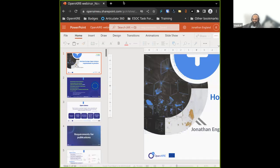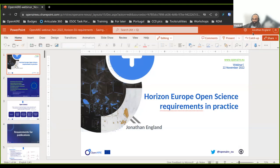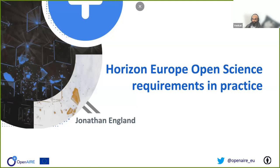They will cover the Horizon Europe policy requirements for Open Access and DMPs, which is the first topic. Julia will then move on to Open Research Europe and some tools that you can use. And then finally, Jonathan will go back to Horizon Europe grant proposals. Hopefully what you'll learn about is mandatory and recommended open science requirements in Horizon Europe, compliance with the Open Access to Publications mandate, managing and sharing research data, delivering data management plans, reporting publications and datasets, and OpenAIRE tools and services to support Horizon Europe projects.